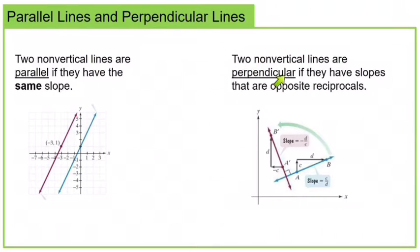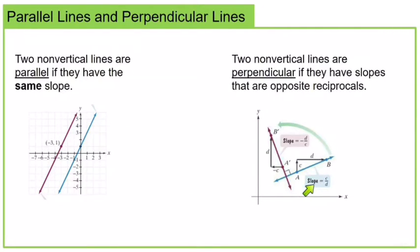Two non-vertical lines are perpendicular if they have slopes that are opposite reciprocals. Remember that slope is rise over run. This blue line has a slope of c over d. If we rotate that to the perpendicular position, what used to be the rise becomes the run and it's backwards, and what used to be the run becomes the rise. So this red line has a slope of negative d over c — they are opposite in sign and also reciprocals.